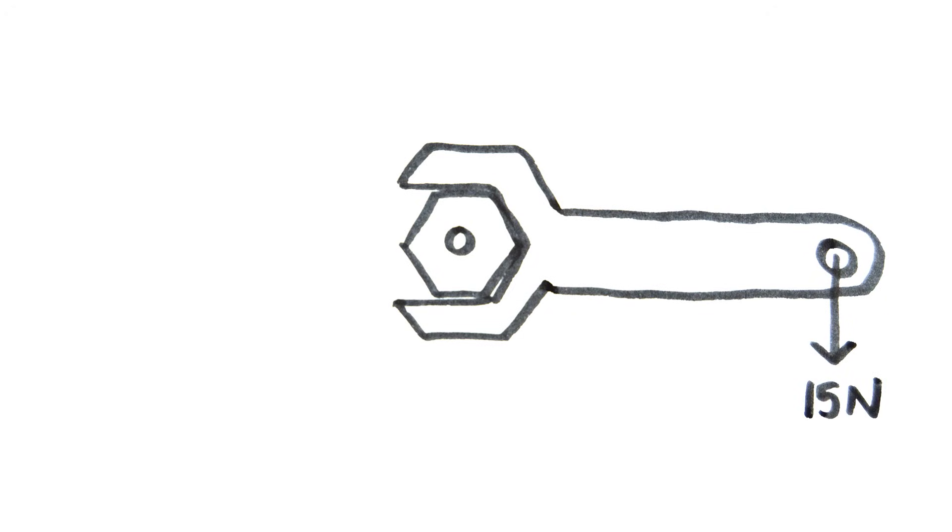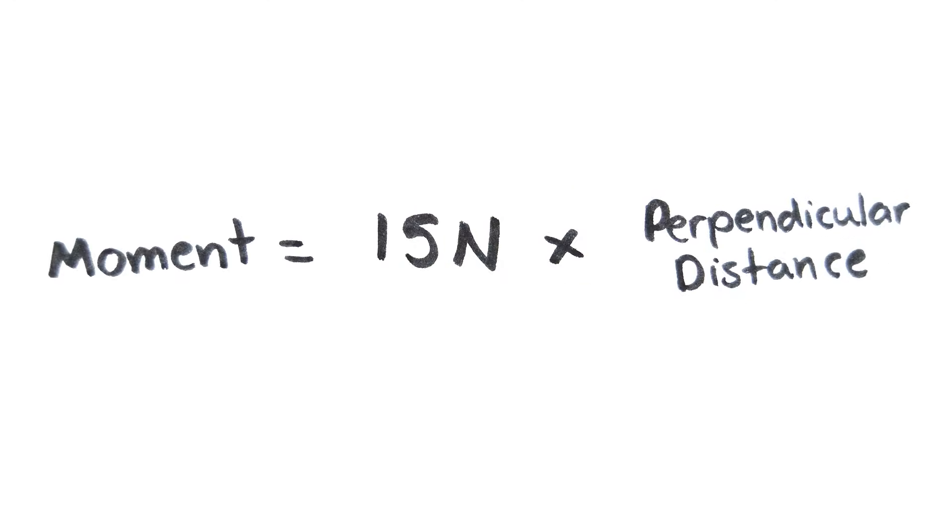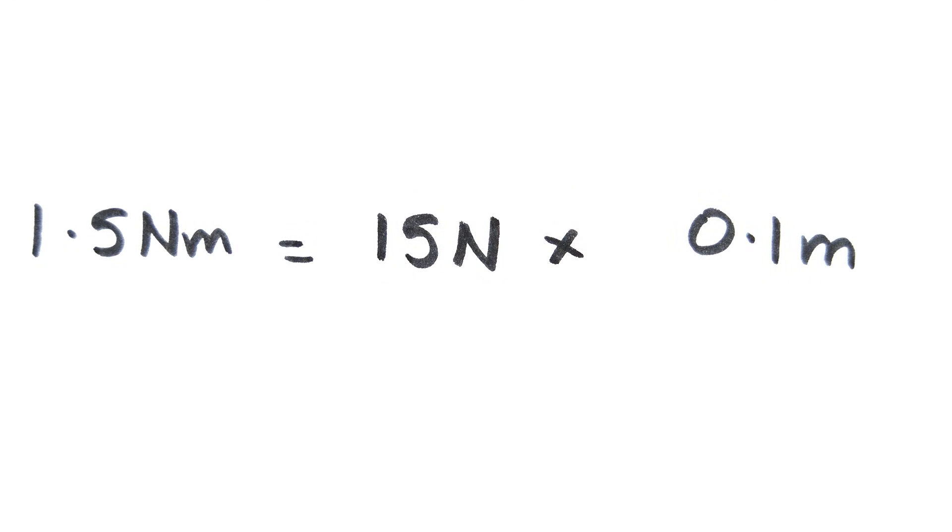For example, by turning a spanner you are producing a moment. If you apply a force of 15 newtons to the end of the spanner and the length of it is 0.1 meters, then the moment you are applying is 1.5 newton meters.